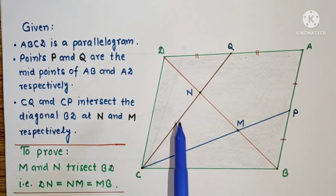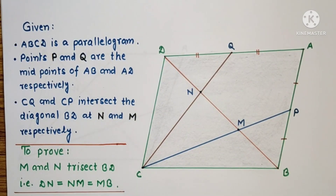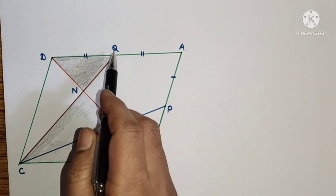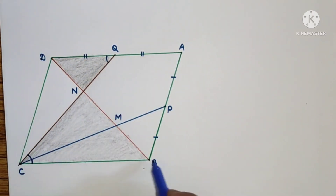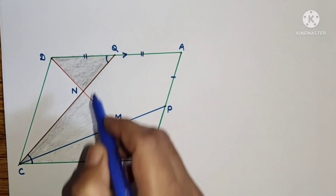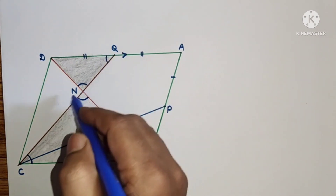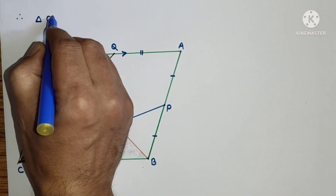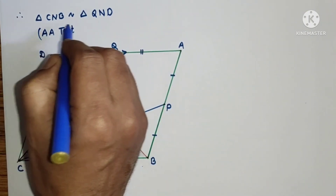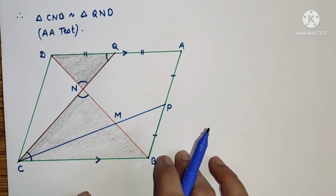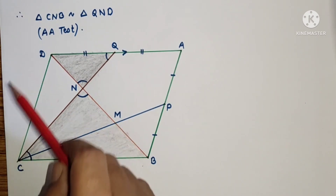To prove this, we will prove these two pairs of triangles similar. Consider triangles BCN and QND. This angle is equal to this angle because these two lines are parallel in a parallelogram, so alternate angles are equal. And these two angles are equal because they are vertically opposite angles. So by AA test of similarity, triangle CNB is similar to triangle QND.